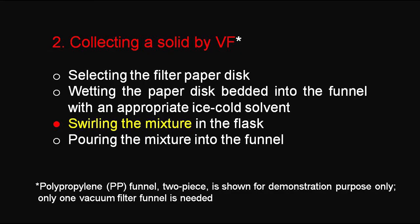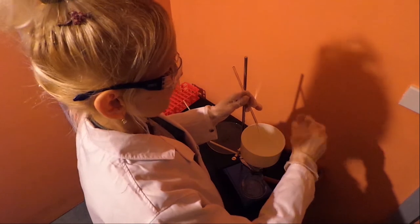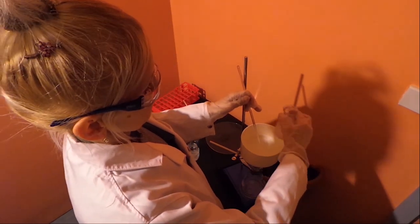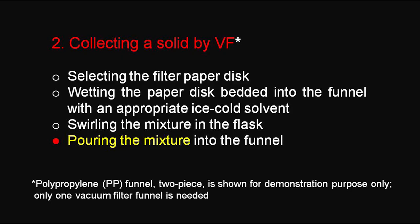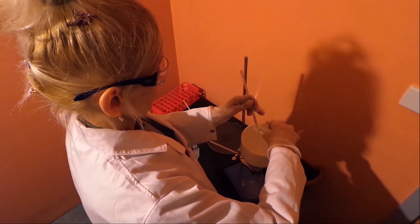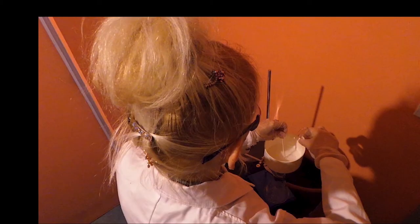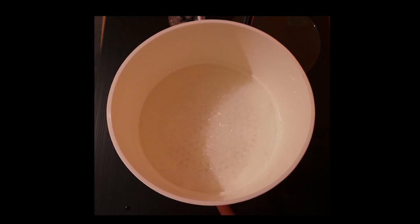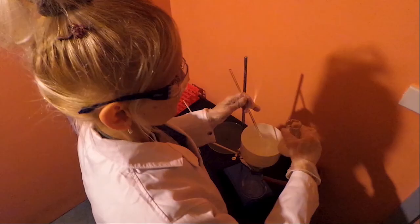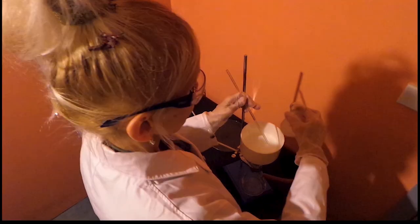Before the paper dries, we need to start adding the mixture. After swirling the mixture gently in the flask, pour the mixture down a clean glass rod into the center of the filter medium to prevent splashing and spillage, while applying only a light vacuum until a protective layer of solid has built up on top of the paper disk to prevent paper breakage. It is better to add the mixture in small portions rather than all at once, so we can avoid overfilling.